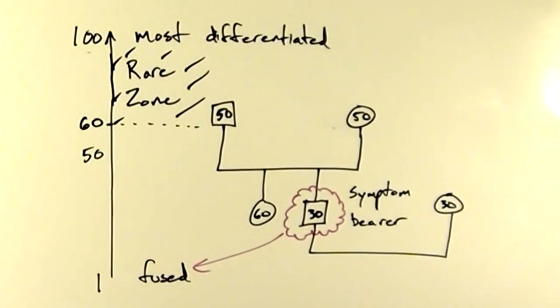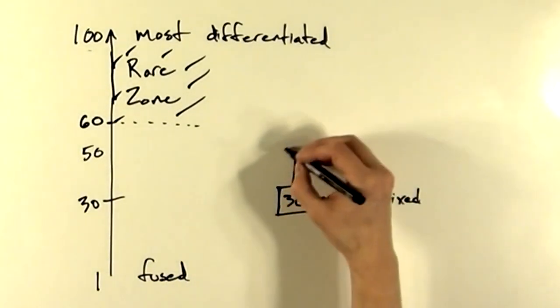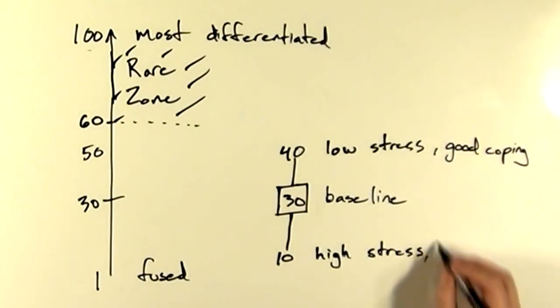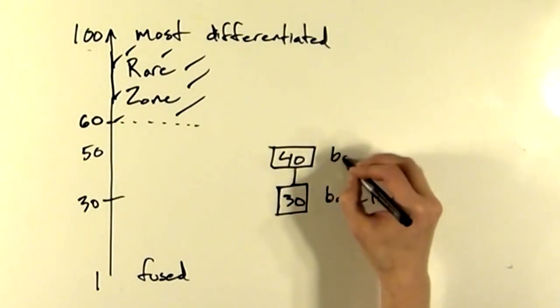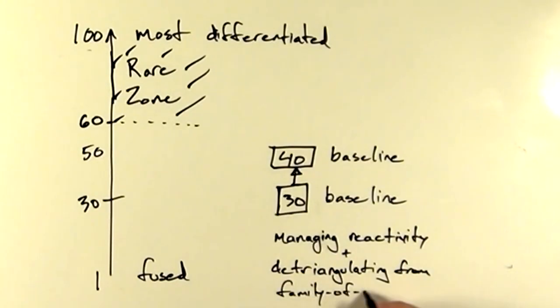Also, we tend to choose spouses and friends with similar differentiation levels. So he believed that your differentiation level is relatively fixed for life. However, your differentiation level will diverge from your baseline depending on your current stress level and the coping skills that you employ. Bowen believed that you can slowly raise your baseline differentiation level by managing your emotional reactivity and by detriangulating yourself from your family of origin, particularly your parents.